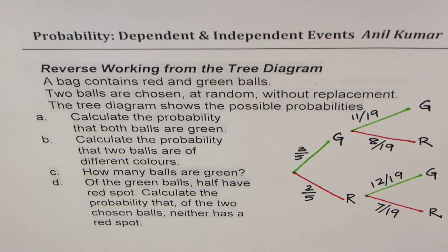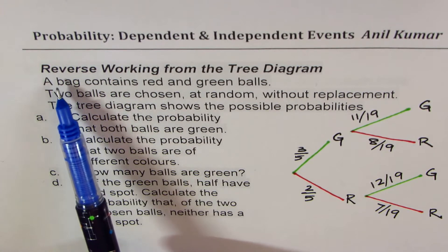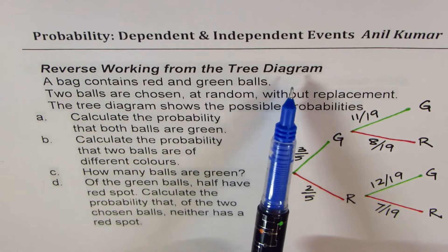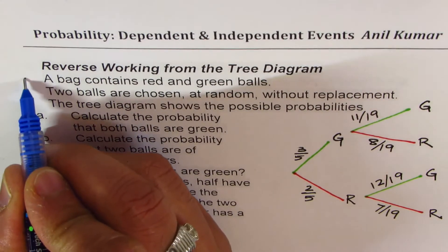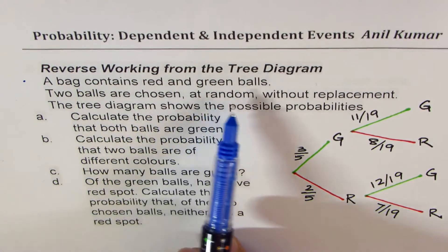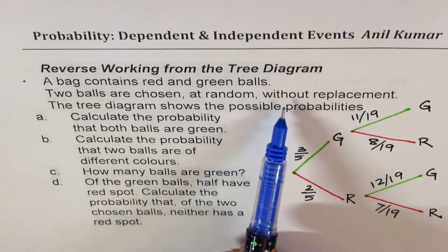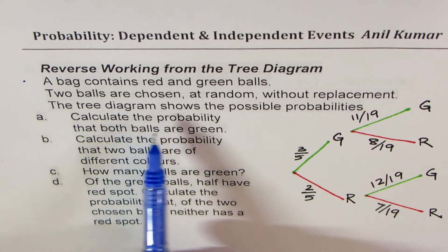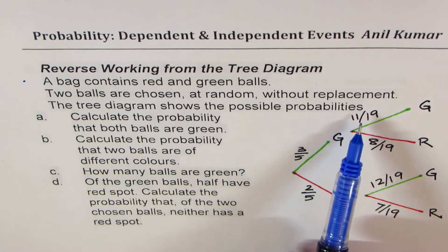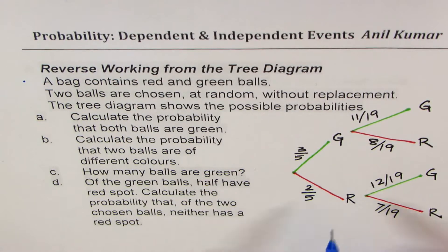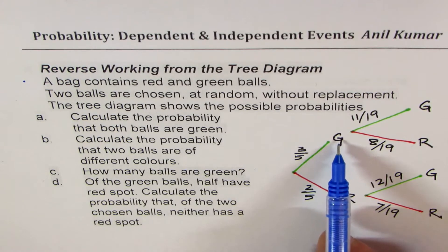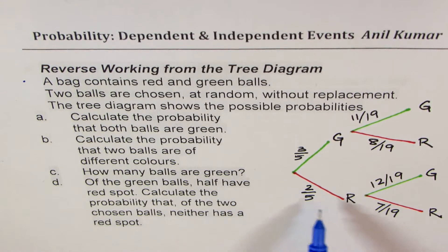We are talking about probability of dependent and independent events. In this particular example you will understand how we work in reverse order from a tree diagram. The question is: a bag contains red and green balls. Two balls are chosen at random without replacement. The tree diagram shows the possible probabilities. The first time, the probability of getting the green ball is 3 over 5 and the red ball is 2 over 5. That is the first pick.